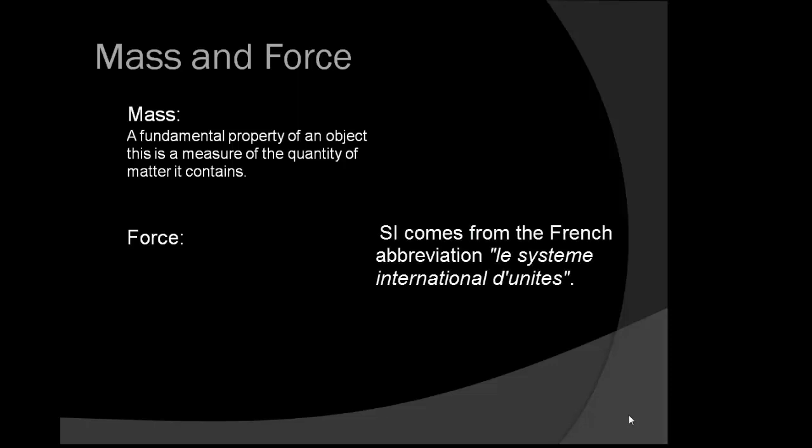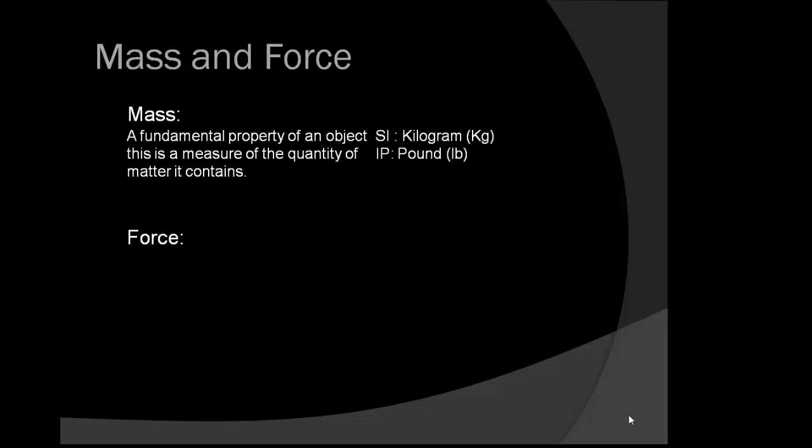In the SI or metric system of units, mass is measured in grams or kilograms and so on. For those of us dealing with building energy systems, we will also need to understand units of measure in what is called the Imperial or IP system. For mass, the common IP unit is the pound, abbreviated with the lb.